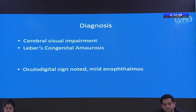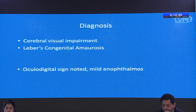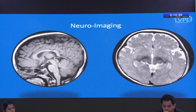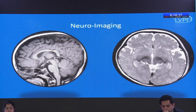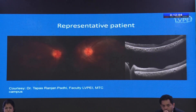Given this, I had two major differential diagnoses: cerebral visual impairment and Leber's Congenital Amaurosis (LCA). With no significant history of perinatal asphyxia, cerebral visual impairment was lower on the list. I then noticed an ocular digital sign and mild enophthalmos. Neuroimaging was obtained because the fundus was quite normal, and it appeared completely normal for age with no evidence of asphyxia or hypoxic changes in the periventricular or occipital lobes. The patient was tested for LCA mutations and turned out positive, establishing the diagnosis.